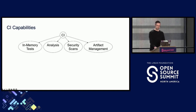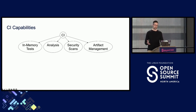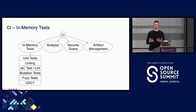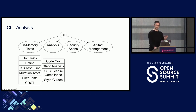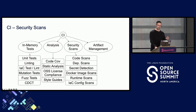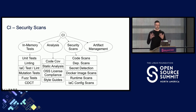Here are our top-level CI capabilities. As I go into this at the various levels, I want to stress this isn't meant to be gospel by any means — this is just our current thinking. We start with in-memory tests. For sub-capabilities we have unit tests and linting, both at the code and infrastructure-as-code level. We have mutation tests, fuzz tests, and consumer-driven contract tests. For analysis, primarily static code analysis. We have various types of security scans, and we wanted to call out security as kind of its own capability.